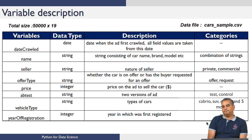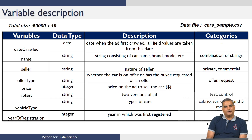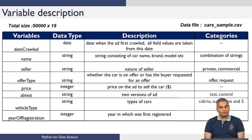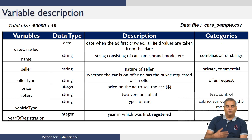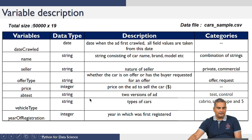Much like the classification problem, we think about this data in a matrix format. Storm Motors has data for about 50,000 cars in their database that have been sold or processed. There are 19 variables associated with this problem. One of these is the outcome variable — the price of the car — and the others contain information we hope can be used to predict the price. Going through these variables: there is a variable called date crawl with data type date.